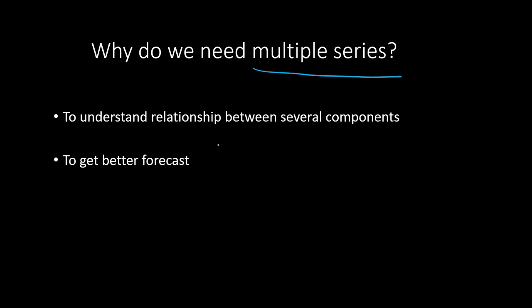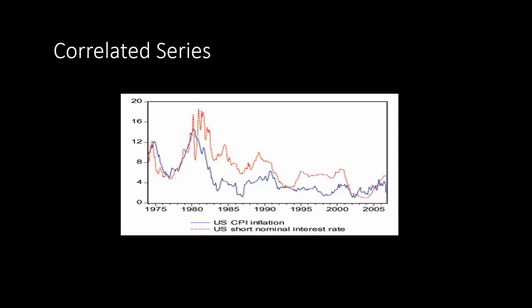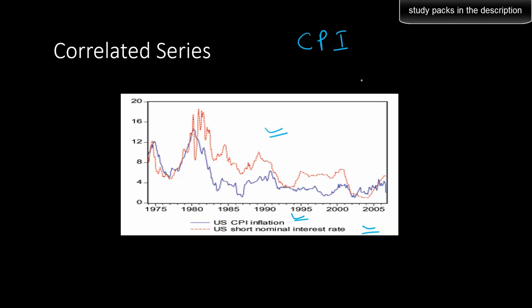Sometimes we need to understand the relationship between several time series components, and the second reason is to get a better forecast. Here is an example: we have the US CPI inflation data and the US short-term nominal interest rate. You can see both are highly correlated. So if we are to forecast the US CPI inflation for the future, we can not only use the past CPI data but also use the past data of the short-term nominal interest rate.